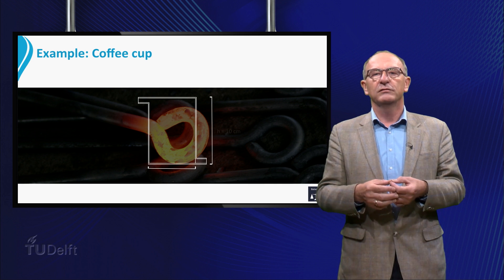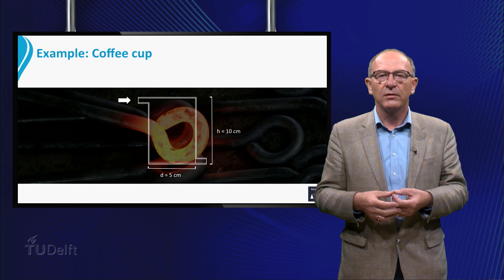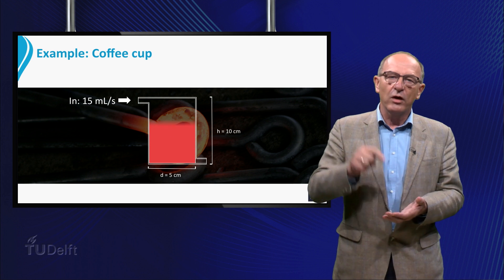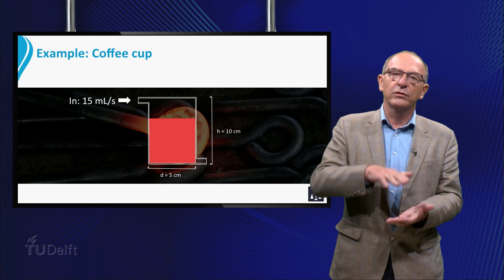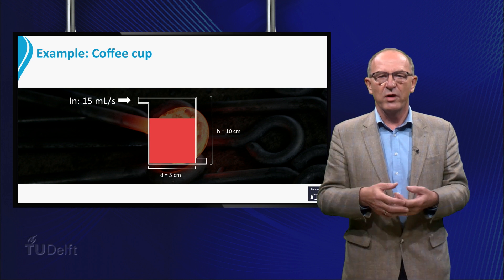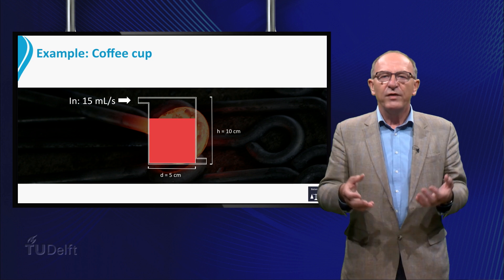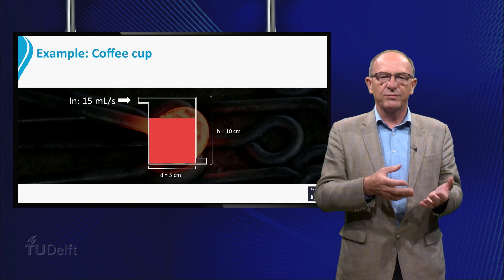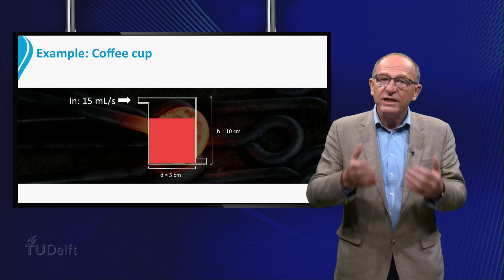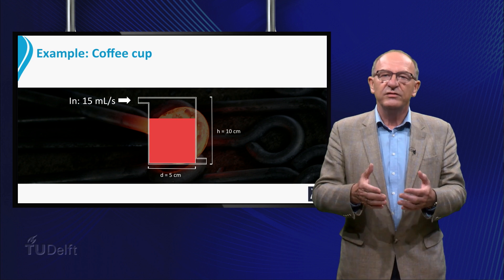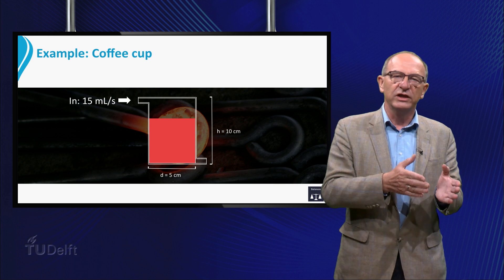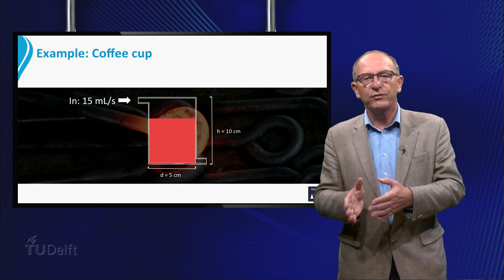Let's assume that the flow rate is 15 ml per second. There is no outflow, so we have only an inflow of coffee until the beaker is full. This gives us a time of about 10 seconds to fill this mug. We have now seen an example of the mass balance, but in a similar way we could set up an energy balance. This means that you have to look at what changes in time and how much energy enters the volume and how much leaves the considered volume.